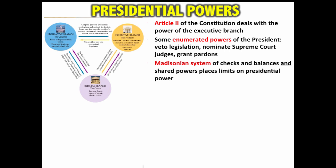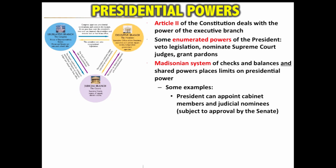The Madisonian system of checks and balances places limits on presidential power. For example, the president can appoint cabinet members and judicial nominees, but these individuals are subject to approval by the Senate. Another example: the president is the commander in chief, but it is ultimately Congress who declares war. So in the Constitution, the powers of the president are not absolute and can be checked by other branches of government.